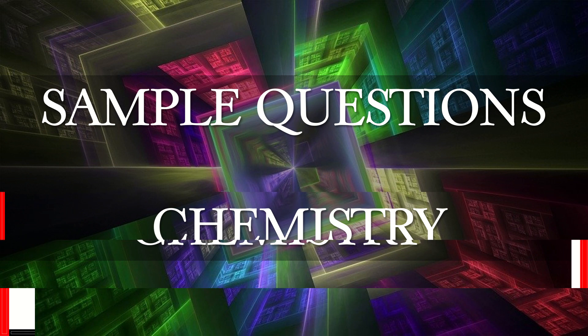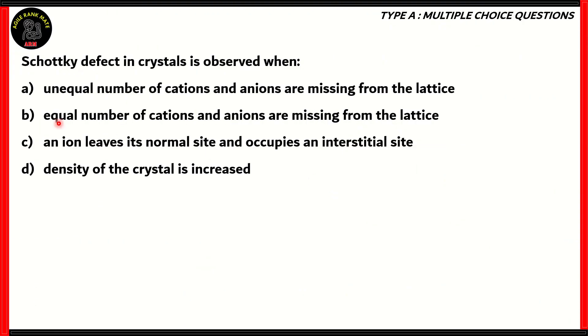So let's start off with our first question. The Schottky defect in crystals is observed when: (a) unequal number of cations and anions are missing from the lattice, (b) equal number of cations and anions are missing from the lattice, (c) an ion leaves its normal site and occupies an interstitial site, (d) density of the crystal is increased.